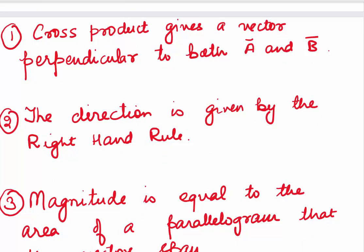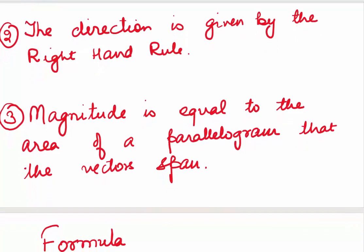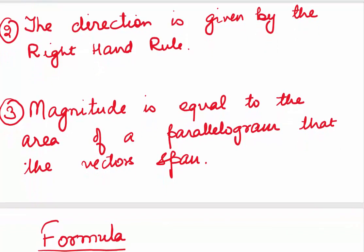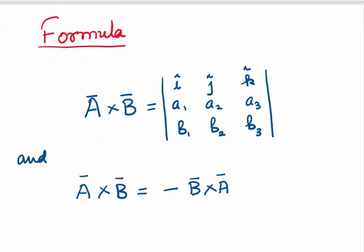The direction is given by the right-hand rule, and the magnitude equals the area of the parallelogram that the vectors span. The formula for A cross B is formed by the determinant with i, j, k in the first row, the coefficients a1, a2, a3 of A in the second row, and the coefficients b1, b2, b3 of B in the third row. Expanding this determinant gives the cross product as a vector.